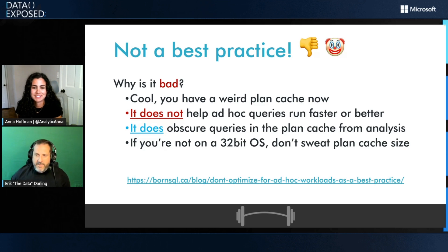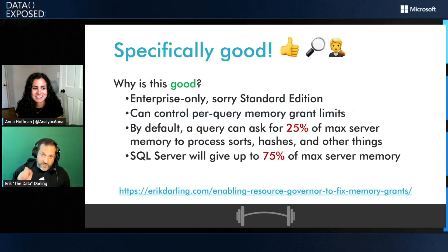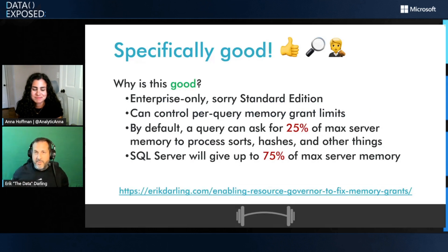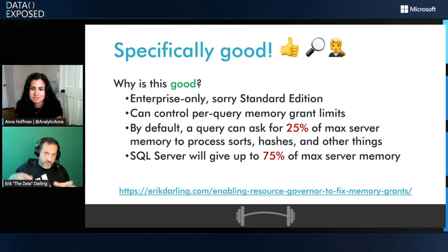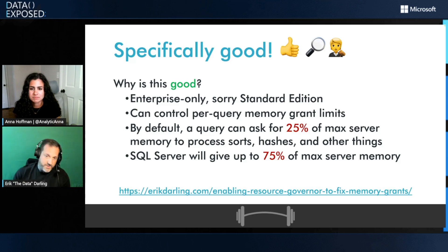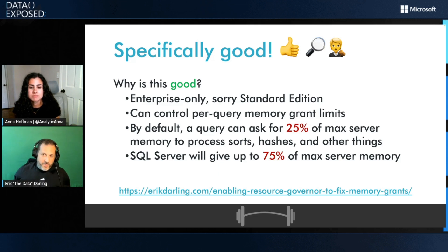Next is resource governor. When I use it, it is fantastic. By default, any single query can come along and ask for 25% of your max server memory setting for a memory grant. On servers with hundreds of gigs or even terabytes of memory, that can take a really big chunk out of things. Even worse, there's only so much memory SQL Server is willing to give out to memory grants, and once you hit that level, queries start waiting just to get memory to run. When I use resource governor, it's when people have big enterprise edition SQL Servers with queries asking for 450, 500, 600 gigs of memory that they hardly use — and they end up wiping out hundreds of gigs of buffer pool space to accommodate those memory grants.